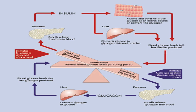After a meal, rising blood glucose stimulates beta cells to produce insulin, which drives body cells and muscle tissue to uptake glucose for energy or convert it to glycogen. The liver is also stimulated to uptake glucose and convert it to glycogen, so blood glucose levels fall. Between meals, when blood glucose falls below normal, alpha cells produce glucagon, which orders the liver to convert stored glycogen back into glucose to raise blood glucose levels again.